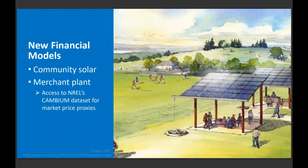On the financial models front, we've recently added a new community solar financial model that looks at the perspective of both community solar developers and community solar participants. We're really hoping to work with industry on use cases and what might be missing to help drive forward adoption across the country. We've also added what we call the merchant plant — a representation of a PV plant that doesn't necessarily have a power purchase agreement with a utility and participates directly in the market. With that, we've implemented the ability to access NREL's Cambium dataset, a series of modeled future data that can serve as proxies for potential market prices.